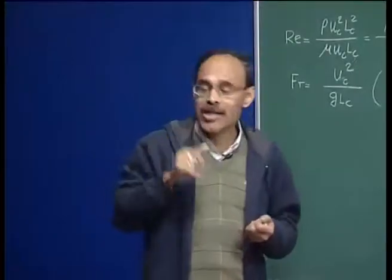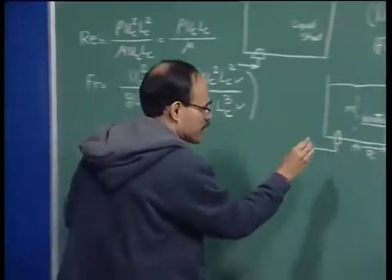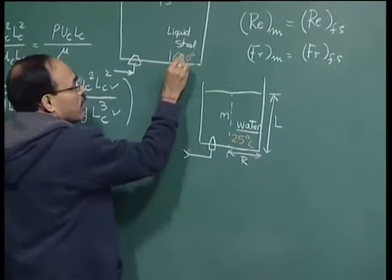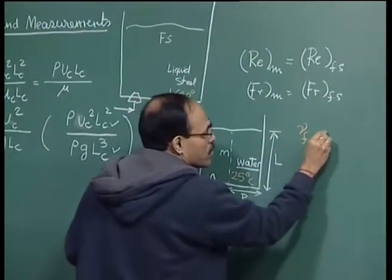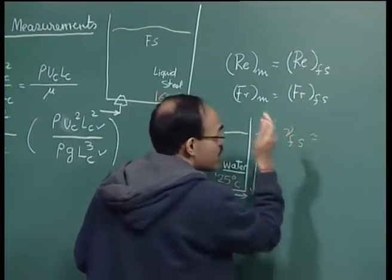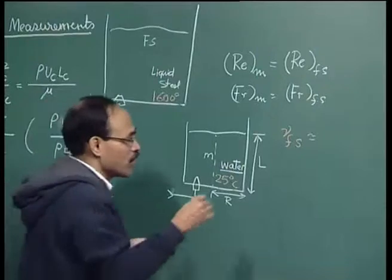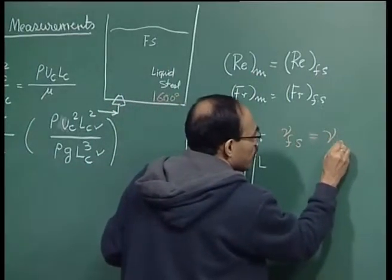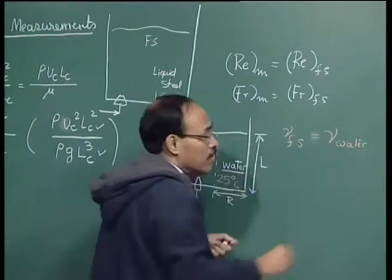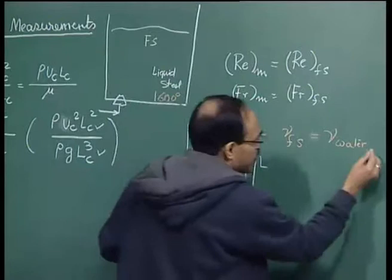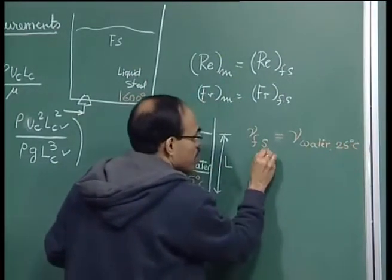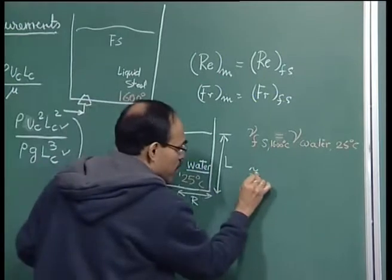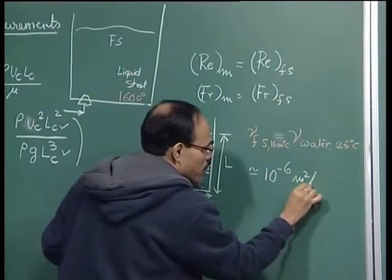One important point: water at room temperature — approximately 25°C — and steel at 1600°C have kinematic viscosities that are approximately equal. In fact, within 1 percent, as a first approximation we can say ν_steel ≈ ν_water. The value in SI units is approximately 10⁻⁶ m²/s. These are state properties, so they must be specified at their respective temperatures: 25°C for water and 1600°C for steel.